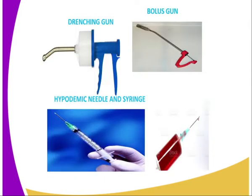Then we have the drenching gun, the hypodermic needle and syringe, and also the bolus gun. The drenching gun is used when administering liquid medicine or drugs to a particular animal. The bolus gun, on the other hand, is used to administer solid drugs through the mouth. Then we have the hypodermic needle, which is used during injection whenever you are controlling diseases in livestock.